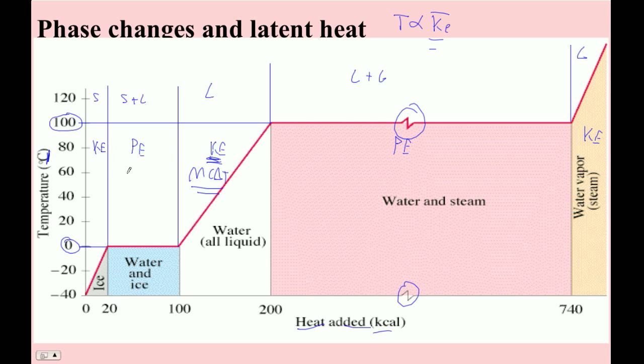For potential energy, the formula is mL. That's our Q equals mL. This is our potential energy formula. This thing here really is how much potential energy you have to put in to make a kilogram of mass undergo a phase change.